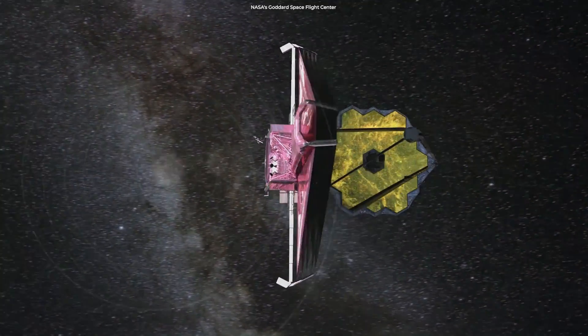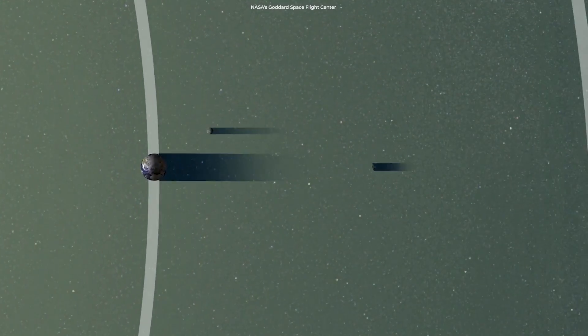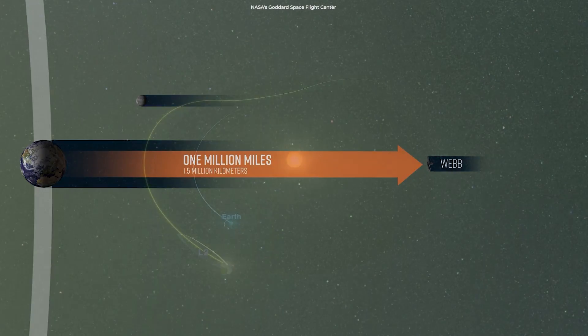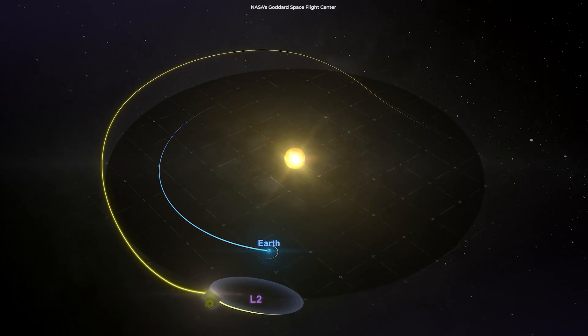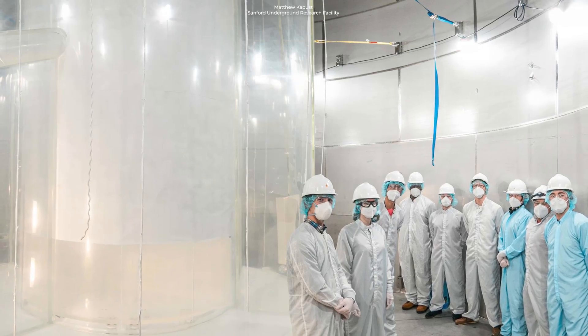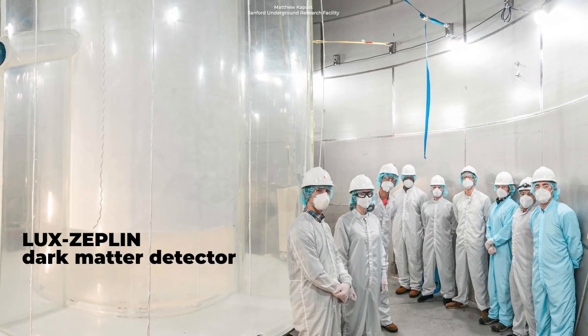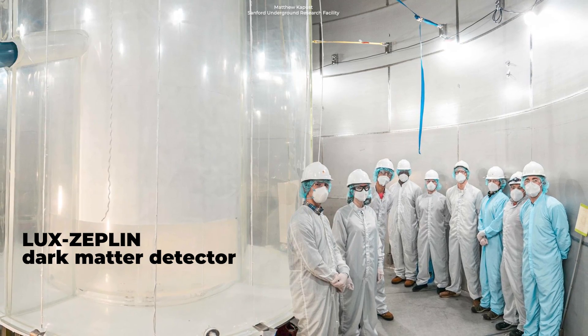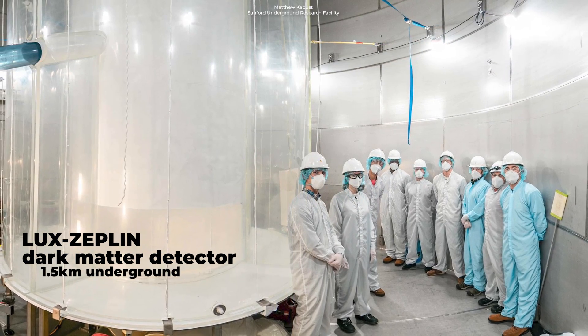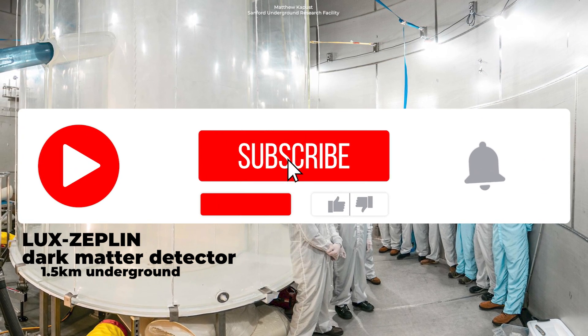The new James Webb Space Telescope launched at the end of 2021 and now is orbiting some 1,500,000 kilometers beyond Earth's orbit around the Sun may help in this regard. So too will the new Lux Zeppelin dark matter detector, touted as the world's most sensitive dark matter detector and located around 1.5 kilometers underground in the US.